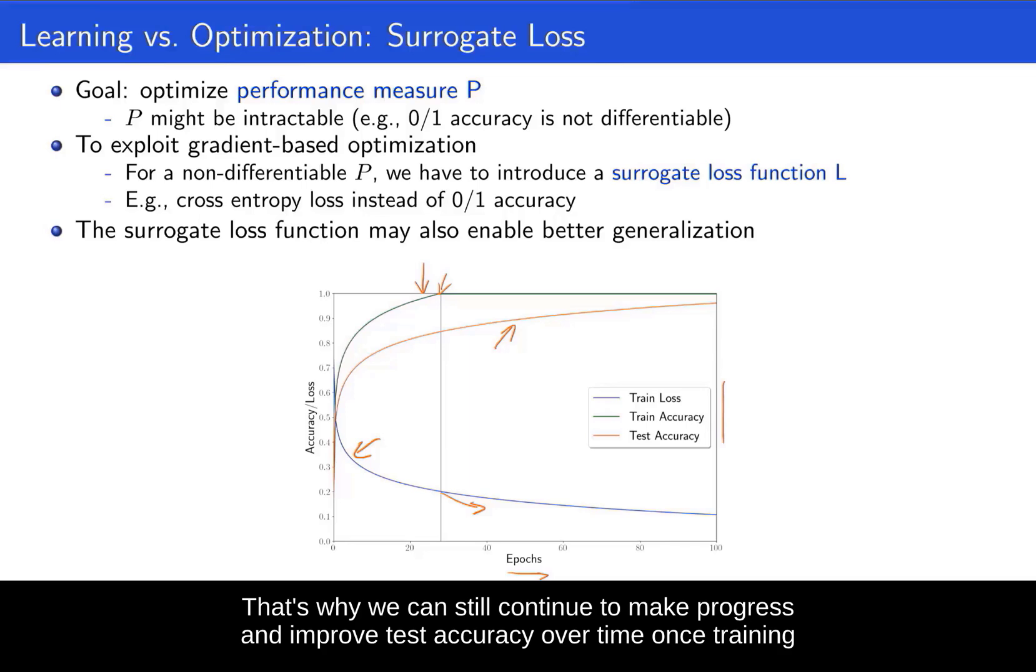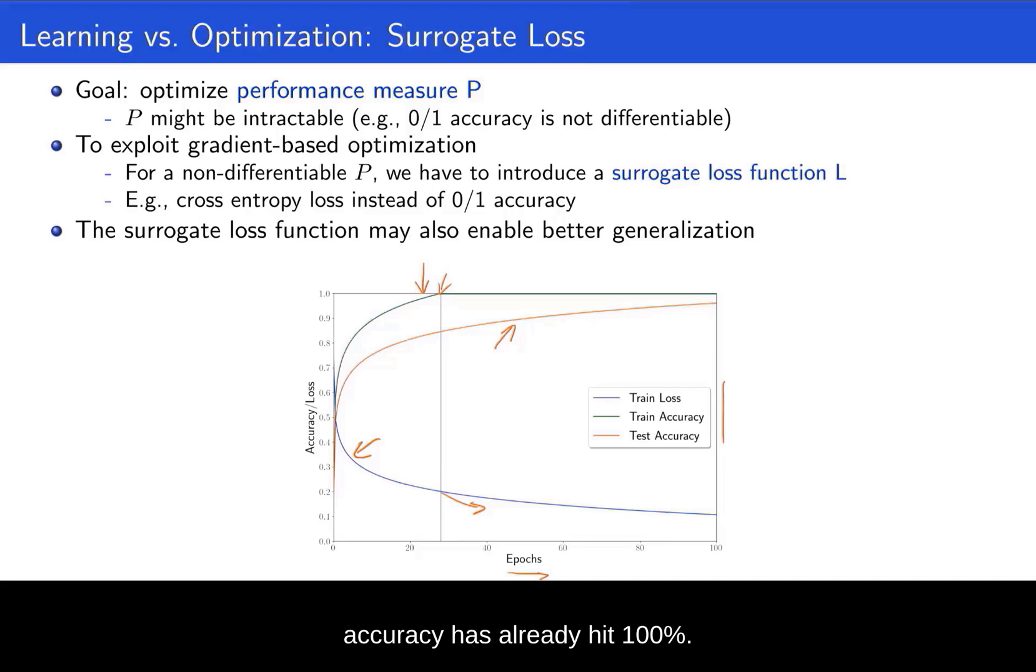That's why we can still continue to make progress and improve test accuracy over time, once training accuracy has already hit 100%. So summarizing, these surrogate losses can actually have additional benefits, other than only the fact that they're differentiable and allow us to do gradient-based optimization.